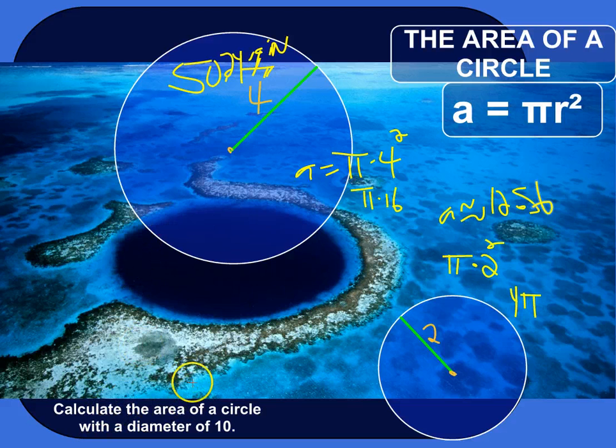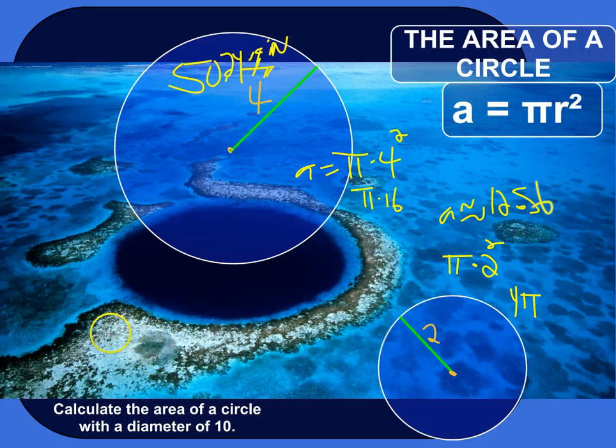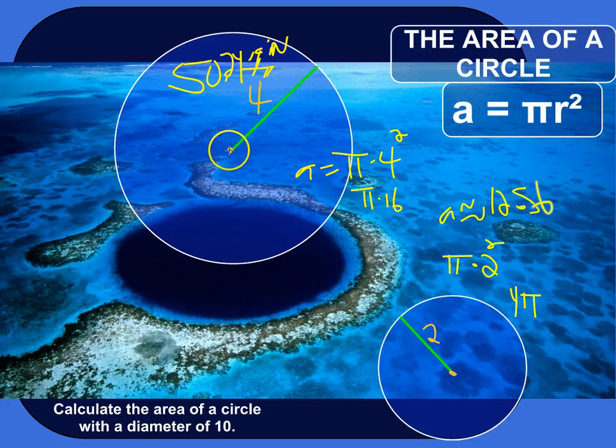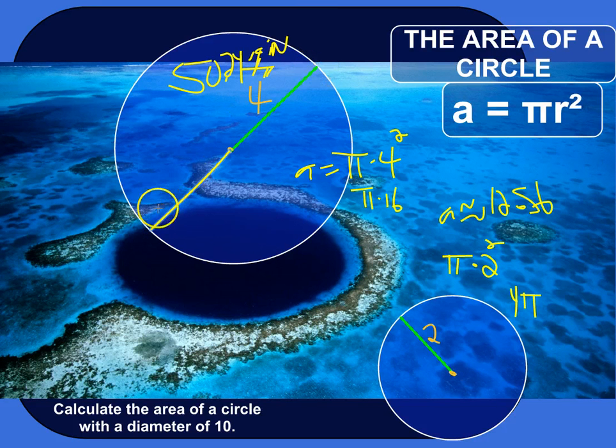Calculate the area of a circle with a diameter of 10. Okay, so the diameter of a circle is the distance all the way across if you go through the center. So, the diameter has endpoints, two endpoints on the circle, and goes through the center.